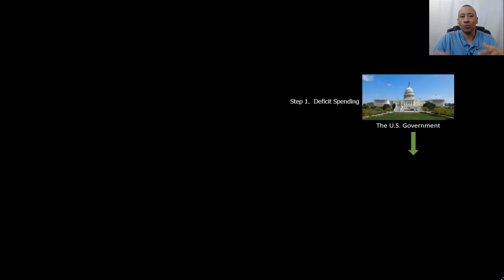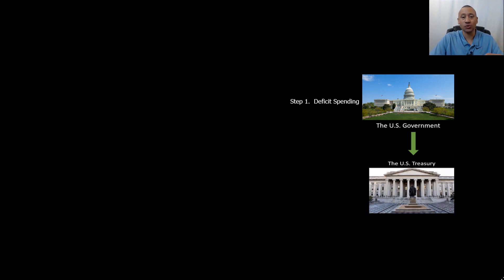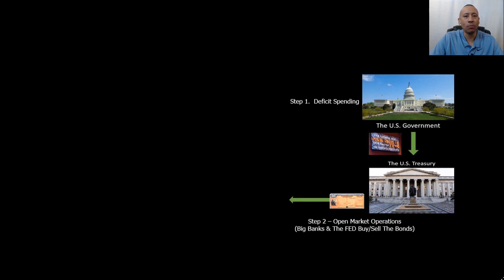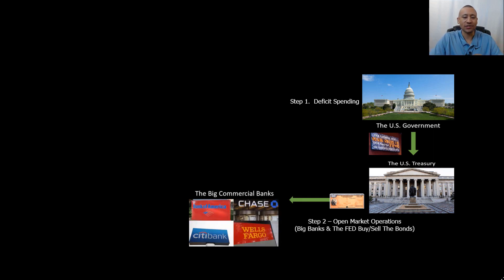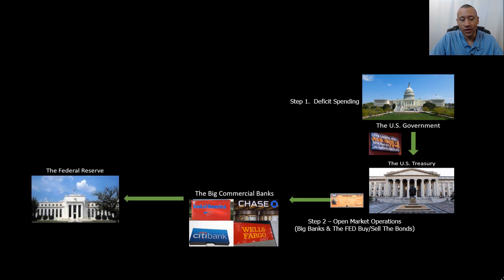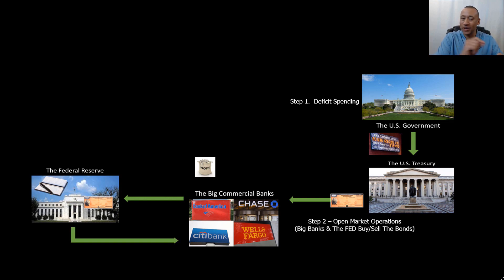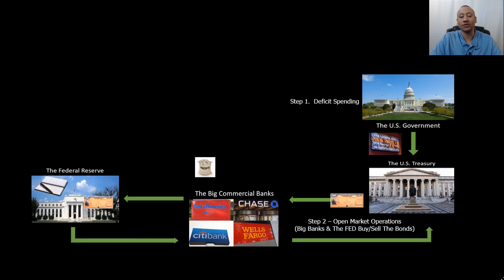It all starts with step one, where the government does deficit spending. From there, it tells the Treasury to issue a bond, and those bonds are what add to our country's national debt. Through step two, through a process called open market operations, the Treasury sells these bonds to the largest banks in the world. The banks are then able to sell these bonds over to the Federal Reserve and make a profit on that sale. From there, the Federal Reserve is able to write their own IOU — they pull out their big checkbook and write a check from nothing — and send that check right back to the commercial banks to purchase the bond. And from there, currency springs directly into existence.